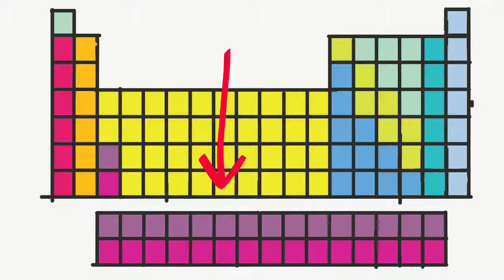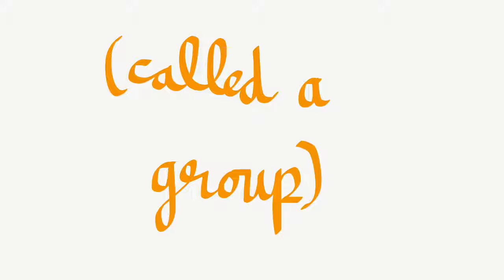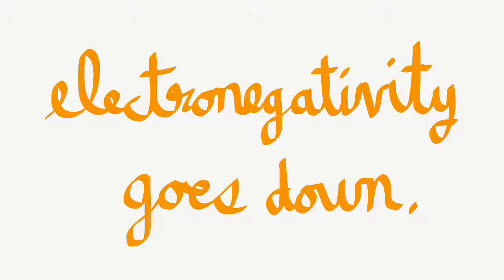When you go down a column in the periodic table, called a group, electronegativity goes down.